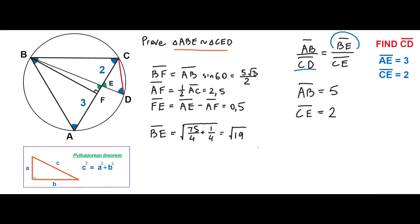Putting the value of the segment BE into this expression, we can finally get the length of the segment CD. The segment CD is equal to segment AB times segment CE divided by segment BE, which is equal to 10 divided by square root 19. So the length of the segment CD is equal to 10 divided by square root 19, which is approximately 2.29. Thanks for watching. Bye.